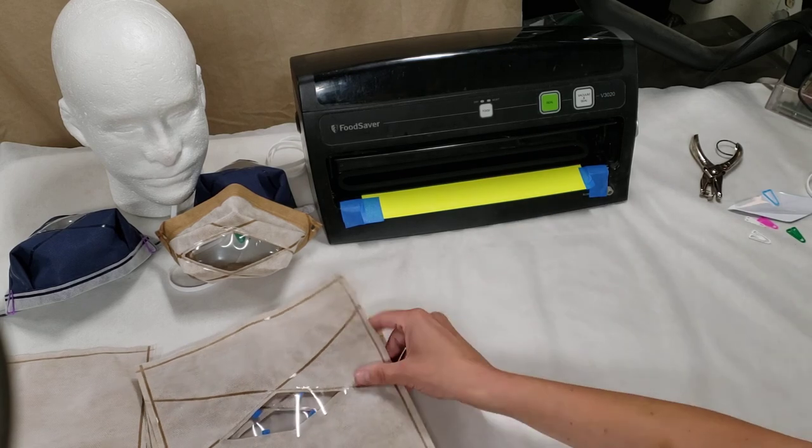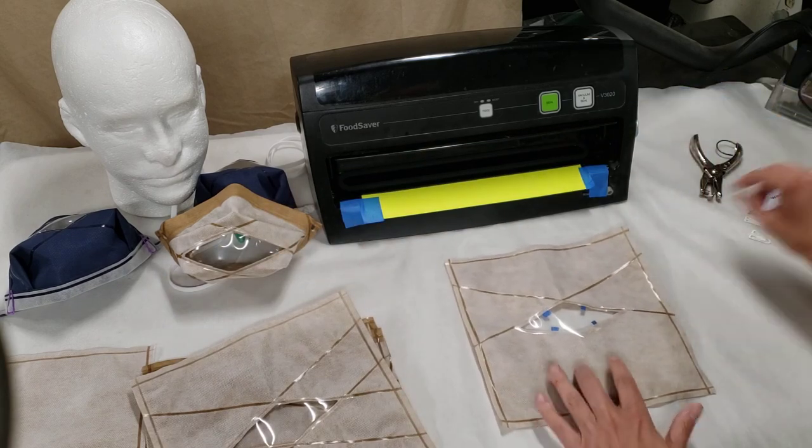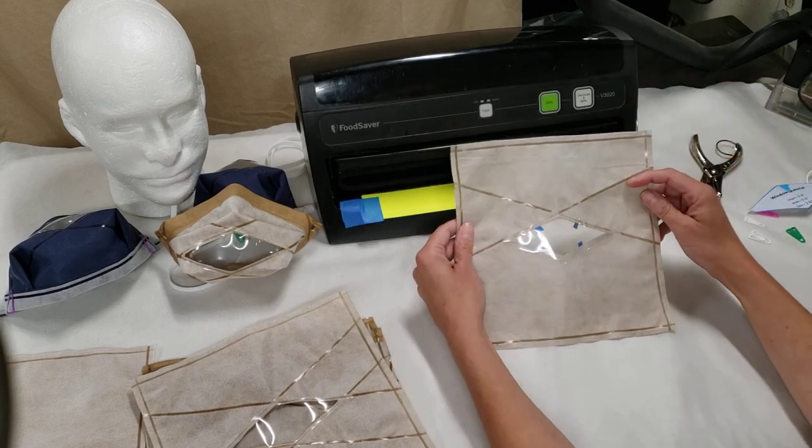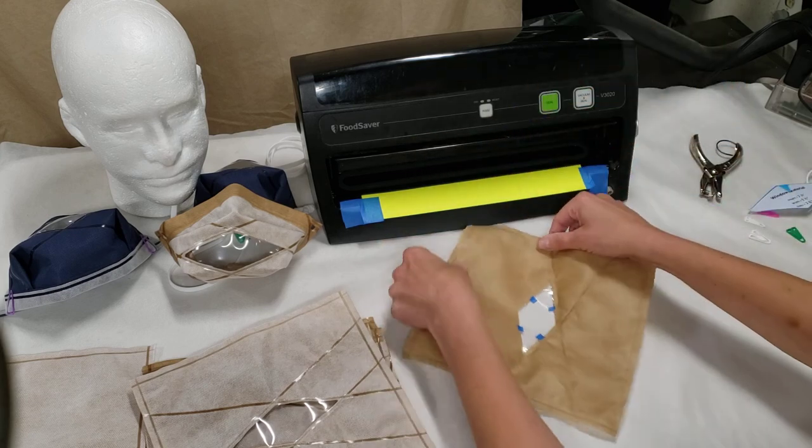Right after that you take your window material and then I usually put in the four little teeth there to hold it in place and then heat seal along each of those edges.